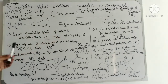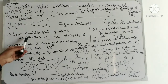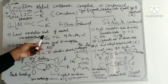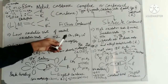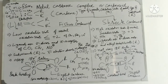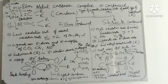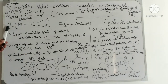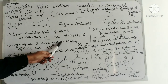In Fischer Carbenoid, the metals have low oxidation state — normally up to plus two, or starting from zero. For example, Chromium, Iron, and similar metals. These metals with low oxidation states are present in Fischer Carbenoids, and the ligands attached to the metal are sigma donors and pi acceptors.